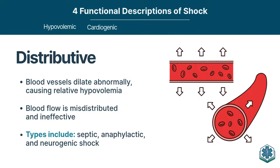Distributive shock — we have about the same amount of blood but it's being distributed improperly. The big causes in medical patients are sepsis and anaphylaxis. In the trauma patient, spine injury especially to T1 through T6 — that's where a lot of the sympathetic innervation goes out to the body. If you knock out the upper thoracic spine, the diaphragm can still move because that comes out of C3 to C5 — 'C3 to C5 keeps the diaphragm alive' is the way to remember that. But that upper thoracic injury disrupts sympathetic outflow to the heart and blood vessels.